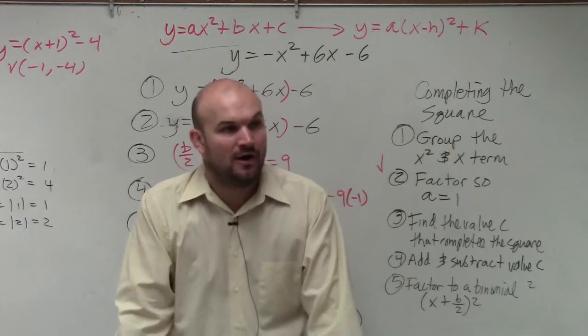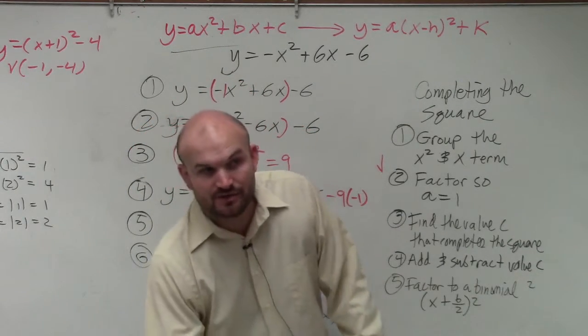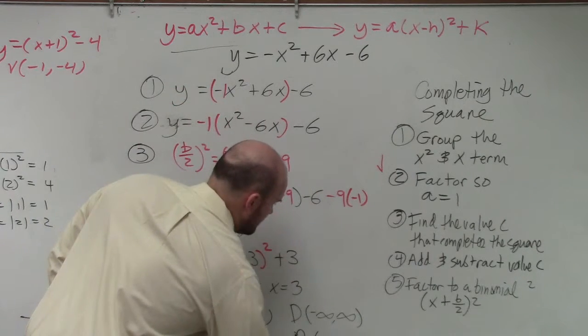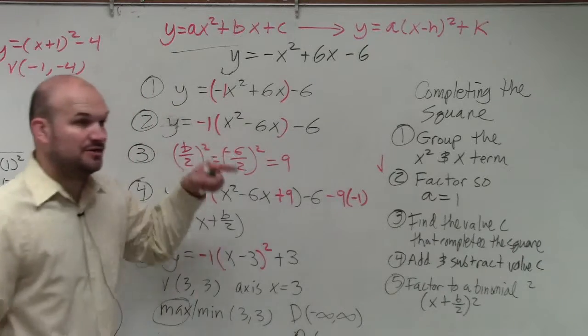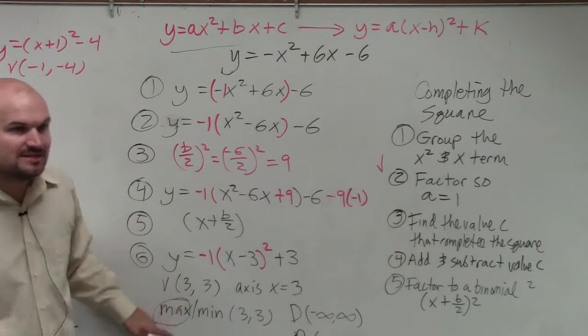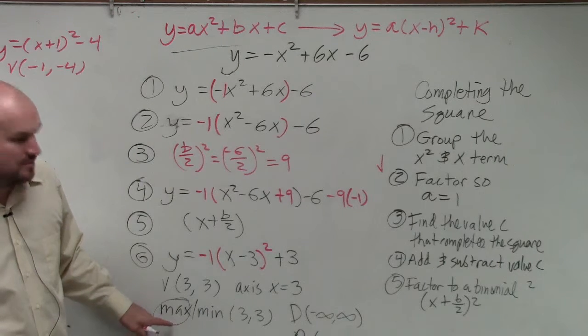But just think about trying to imagine this graph. If the graph is facing down, the lowest y value is going to be negative infinity. And the highest value has to be its maximum. So what is the y-coordinate of the maximum? 3.